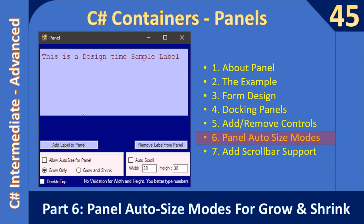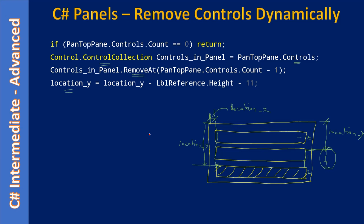Now let us implement this section. Once we implement it you will know how the panel will behave based on the AutoSize as well as AutoSizeMode properties. We will learn the AutoSize behavior by adding and removing controls — these two we already implemented in part five. This is where we left previously; in part five we added and removed controls dynamically in our panel. Now we will continue.